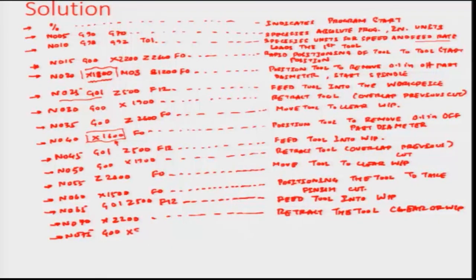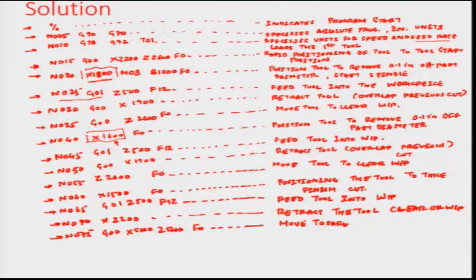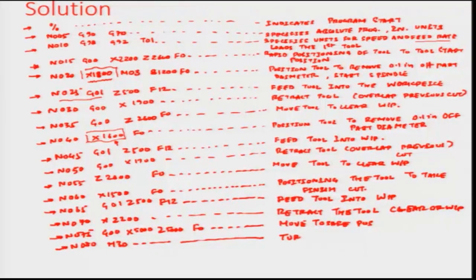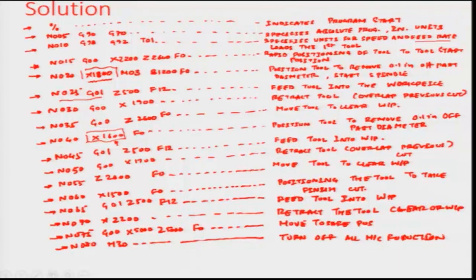Finally, we move the tool to a safe position and turn off all machine functions. In summary, we have programmed two roughing cuts and one finish cut diametrally. The whole program can be printed and extracted from the machine in this format.